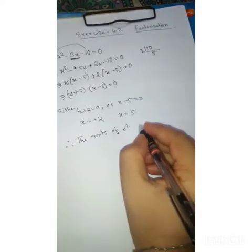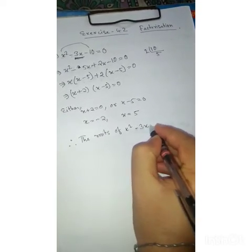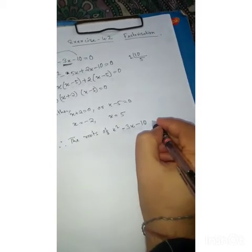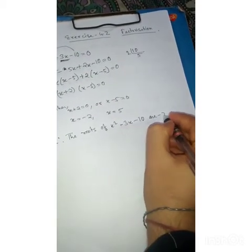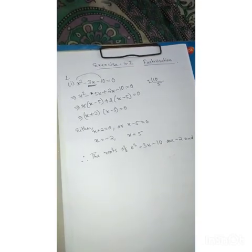Therefore, the roots of x squared minus 3x minus 10 are minus 2 and 5. Thank you, dear students.